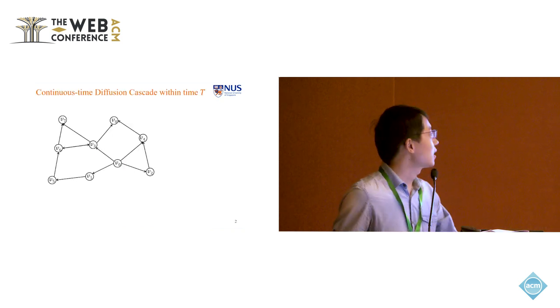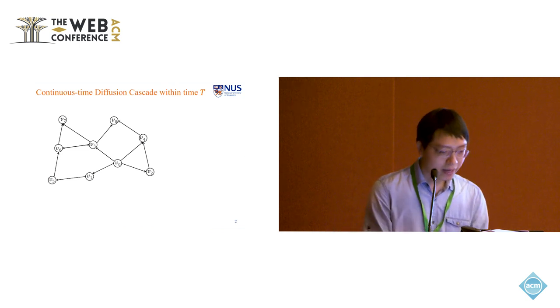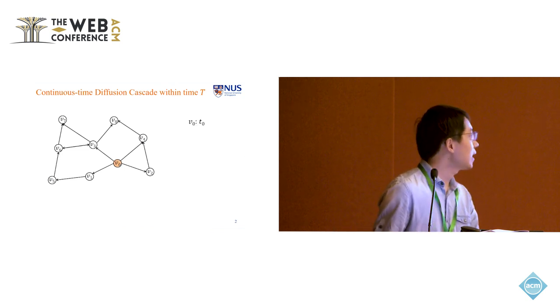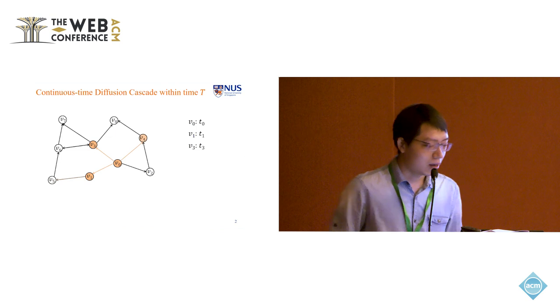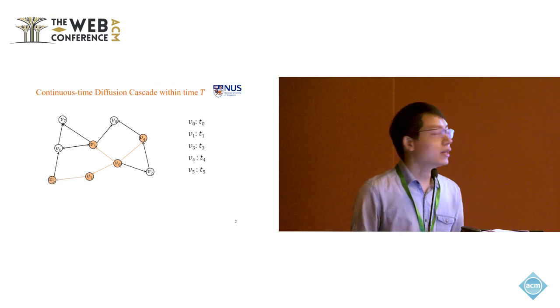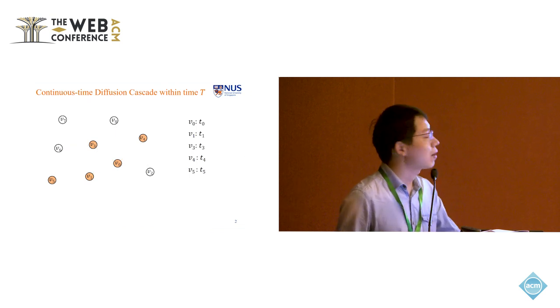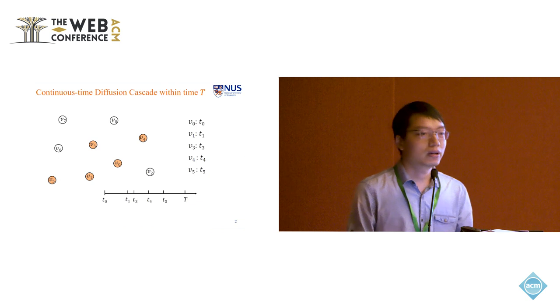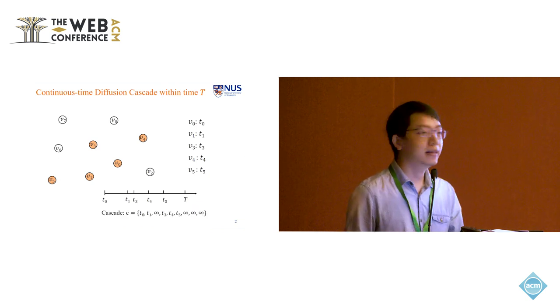First, let's consider a continuous time diffusion cascade within a time frame t. And here we have given a graph. Let's suppose at time t0, node 0 is infected. And then it will start to influence its neighbors within time t. And the corresponding infection time will be recorded. But however, in real world, we do not have the exact knowledge of the graph structures.